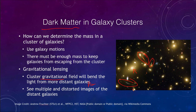We can use Einstein's model of gravity to figure out how much mass must be present to explain the distortions that we see, and when we do that we find that there is many times the amount of matter that must be present that we simply cannot see.